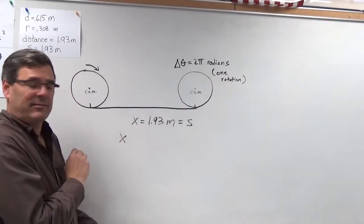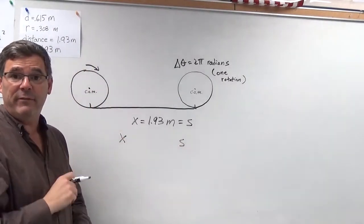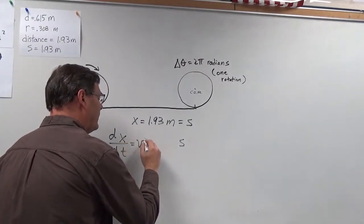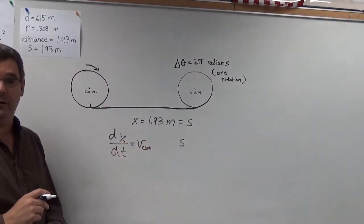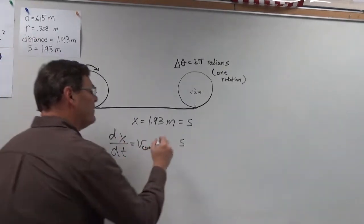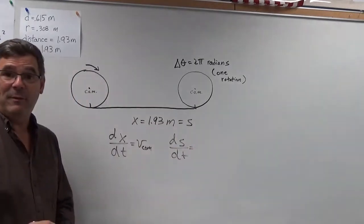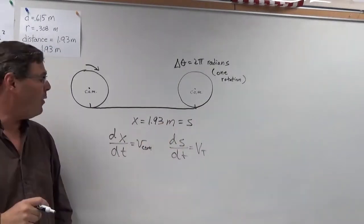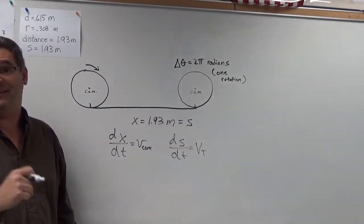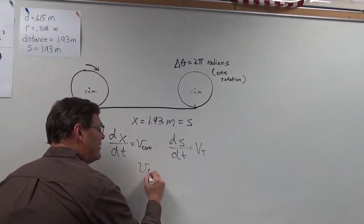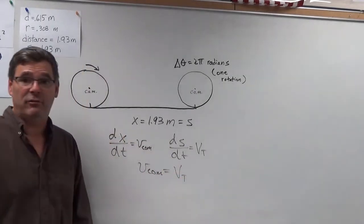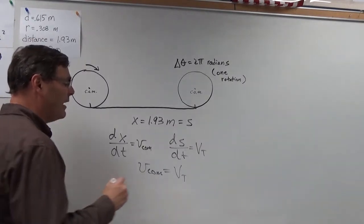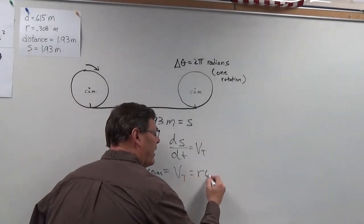My position is X, my arc length is S. When I take the derivative of position with respect to time, that gives me linear velocity — the velocity of the center of mass of the wheel. And if I take the time derivative of arc length, that tells me the tangential velocity. Since both X and S are 1.93 meters and the time for each is the same, the velocity of the center of mass equals the tangential velocity of the wheel. We also know that tangential velocity equals radius times angular velocity.